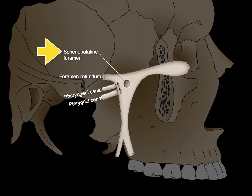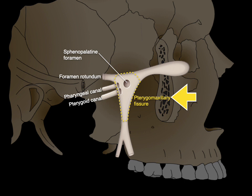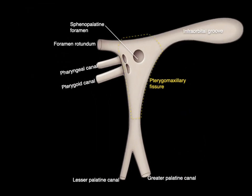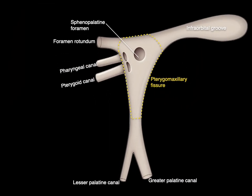Laterally, we have the pterygomaxillary fissure, which communicates with the infratemporal fossa. On top, we have the infraorbital groove that communicates anteriorly with the floor of the orbit. Then below, we have the greater and lesser palatine canals and foramina that communicate with the palate and part of the oral cavity. So there we have all those openings associated with the pterygopalatine fossa.